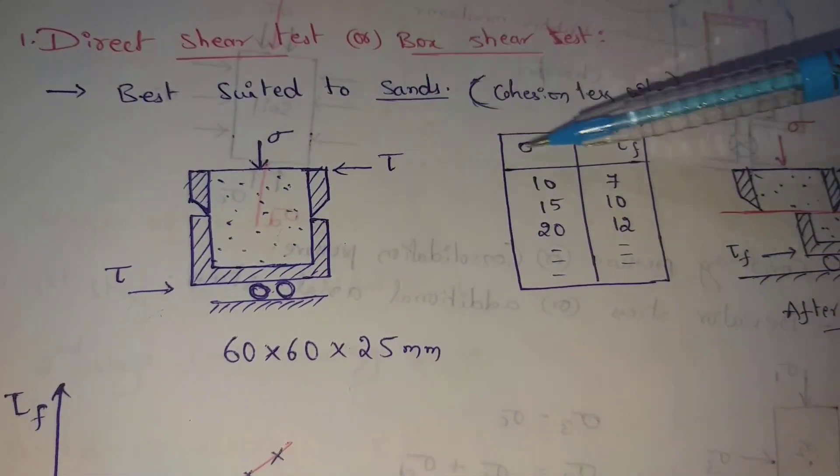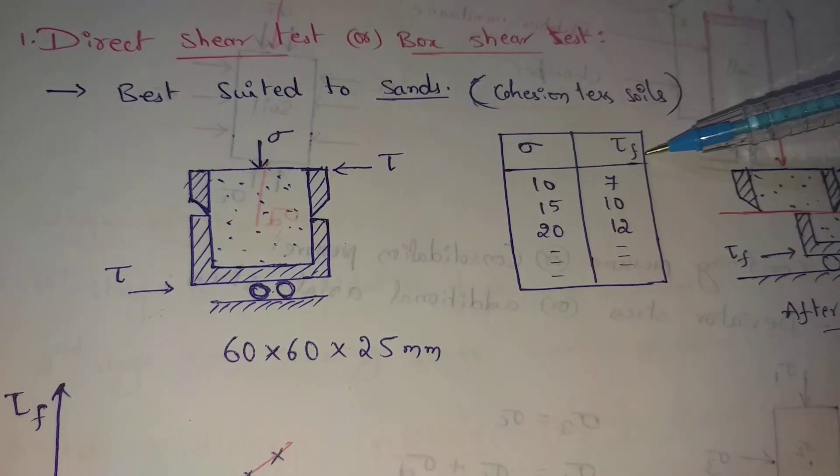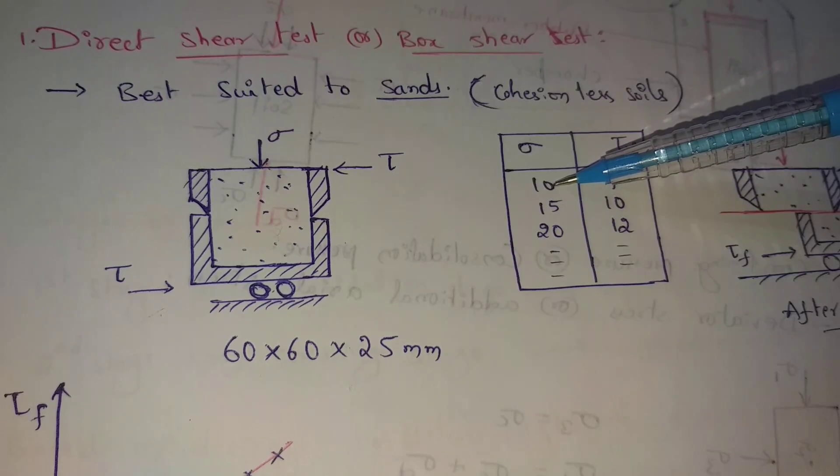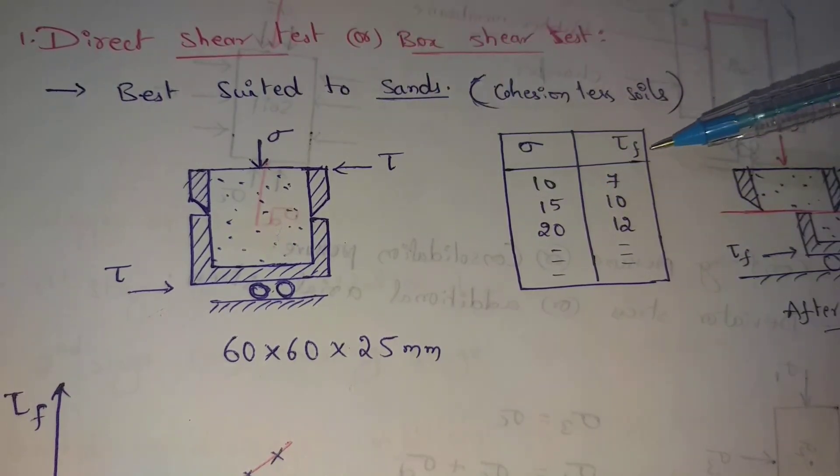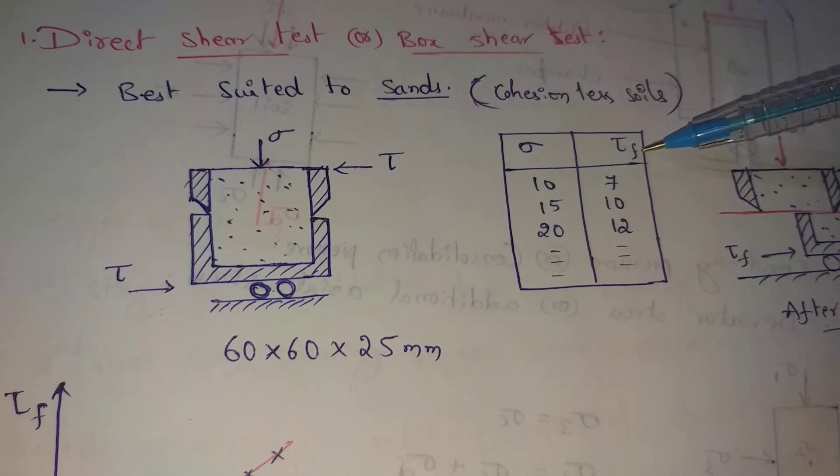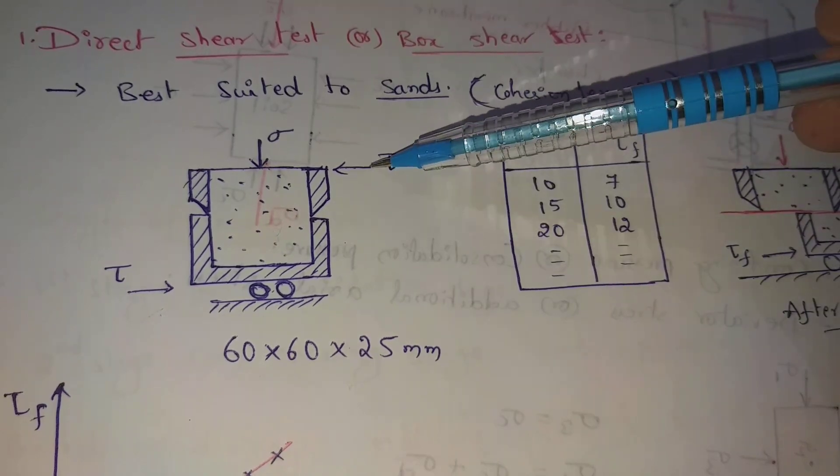Different types of normal stresses are the failure of shear stress. For example, 10 kN per m² normal stress is applied at the top. Failure shear stress is applied at the top and bottom. It is tau value.